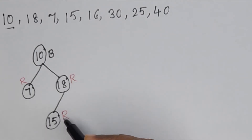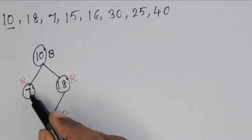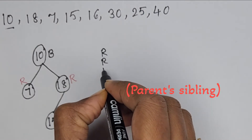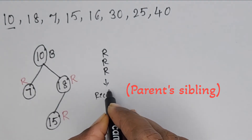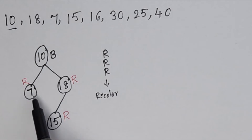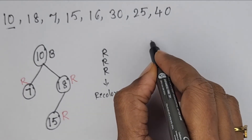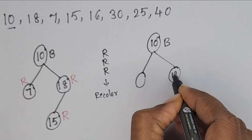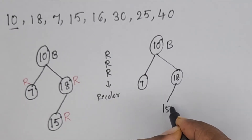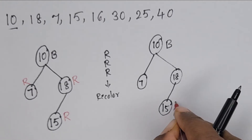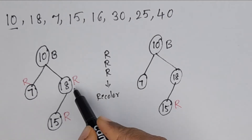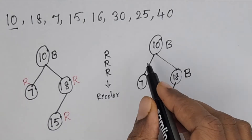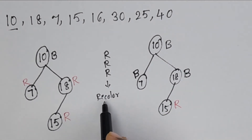To resolve the conflict, we check the sibling. The new node is red, parent is red, and the sibling (7) is also red. In this case, we perform recoloring: change the color of the parent and sibling. Parent 18 is red — make it black. Sibling 7 is also red — make it black. The first step is recolor.